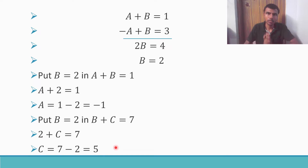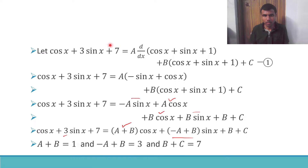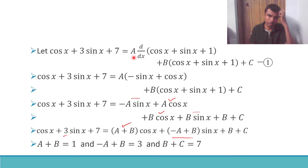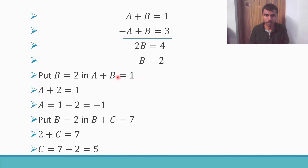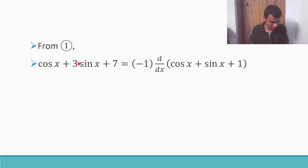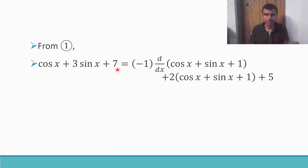I got my a, b, c: a = minus 1, b = 2, c = 5. Now, what was my purpose in finding a, b, c? Basically, the numerator is nothing but a into the derivative of the denominator, plus b into the denominator, plus a constant. Now put the values of a, b, c here.